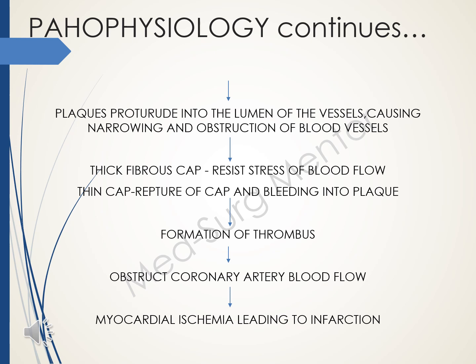At the next stage, the plaques protrude into the lumen of the vessels, causing narrowing and obstruction of the blood vessels. There can be either a thin or thick fibrous cap. If the fibrous cap is thick, it can resist the stress of the blood flow. If it's thin or vulnerable, it can cause rupture of the cap and bleeding into the plaque. At the very next stage, it can cause formation of a thrombus, which can obstruct the coronary blood flow, leading to myocardial ischemia and infarction.